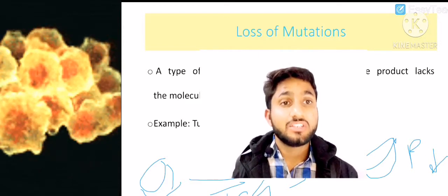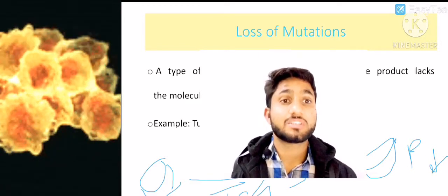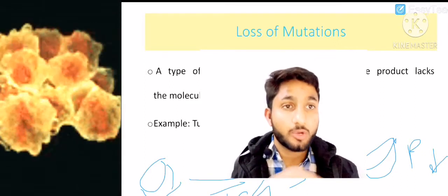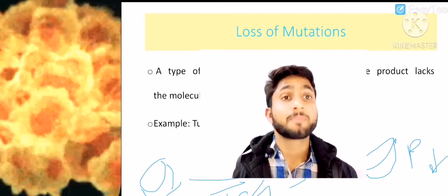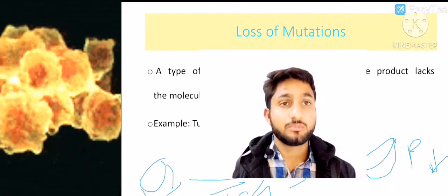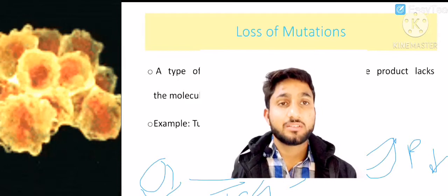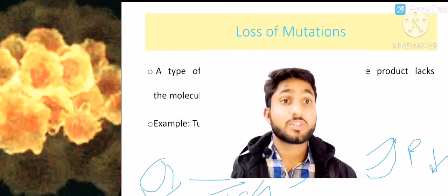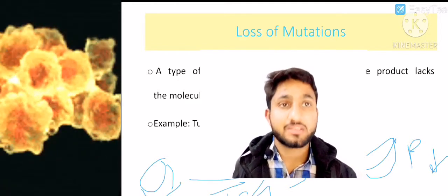In these genes, when they lose their function, proteins will not be produced. Both gain of function mutations and loss of function mutations are recognized as mutations responsible for cancer cell production. This topic is from cancer biology.